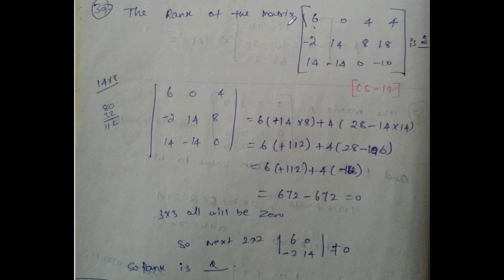Find the rank of the matrix [6,0,4,4; -2,14,8,18; 14,-14,0,10]. I will tell the shortcut from the previous class. Check the 3×3 matrix — eliminate this row and this column, multiply, then eliminate the next row and column. The 3×3 determinant equals 0. Check the next 2×2 matrix — it is not equal to 0. So this matrix's rank is 2.